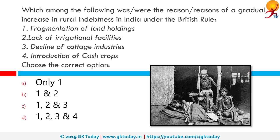Which among the following were reasons for a gradual increase in rural indebtedness in India under British rule? 1. Fragmentation of land holdings. 2. Lack of irrigation facilities. 3. Decline of cottage industries. 4. Introduction of cash crops. The correct options are 1, 2 and 3 — only the fourth option is wrong. The Famine Commission of 1880 concluded that two thirds of the land-holding classes were in debt, while one third were deeply and inextricably in debt.